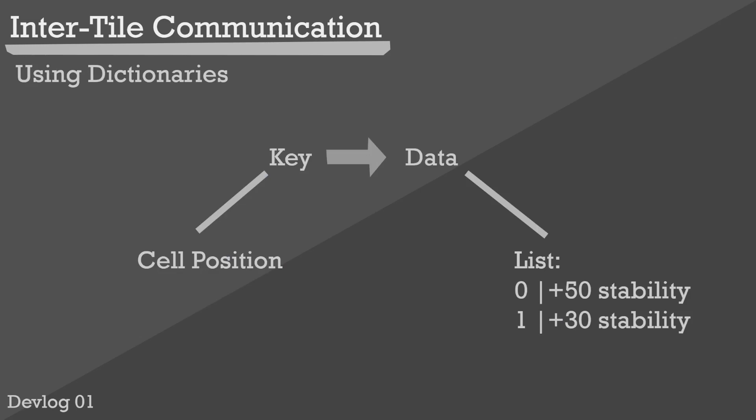During the development of this system I realized it would be a better idea to use dictionaries as the data of this dictionary with the key being the adjacent tile's position and the data from that dictionary in the dictionary being the affected stability. This is to make it easier to change that data during runtime if the adjacent tile stability is affected.